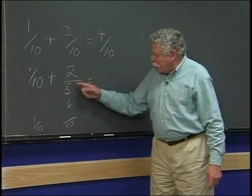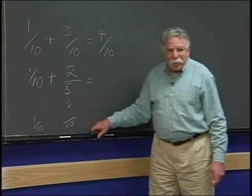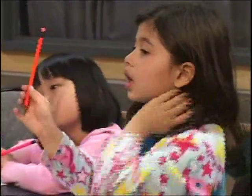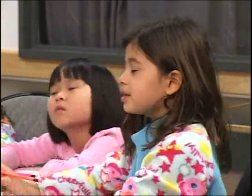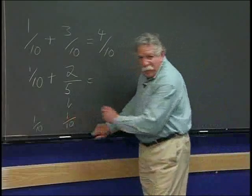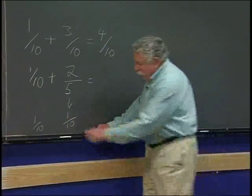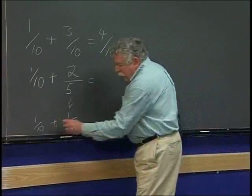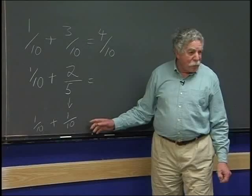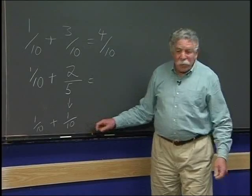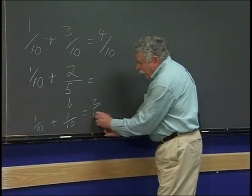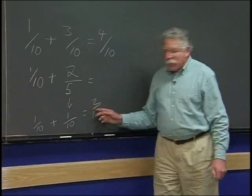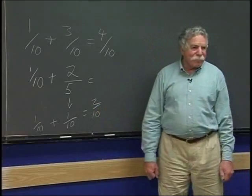The teacher asks Tay what 2/5 turns into. Tay thinks the 2/5 turns into 1. So that's going to be 1/10. 1 plus 1 — I know what it is — 2/10. The teacher asks: so the answer here is going to be? Students say 2/10. The teacher confirms: so in other words, when you take 1/10 and add 2/5 to it, you get 2/10.